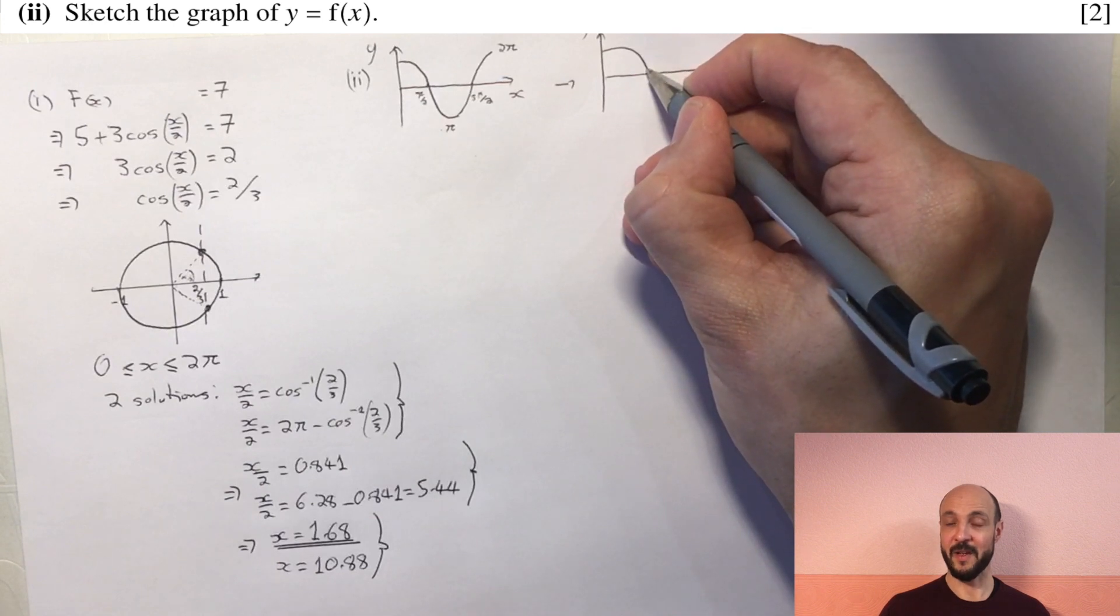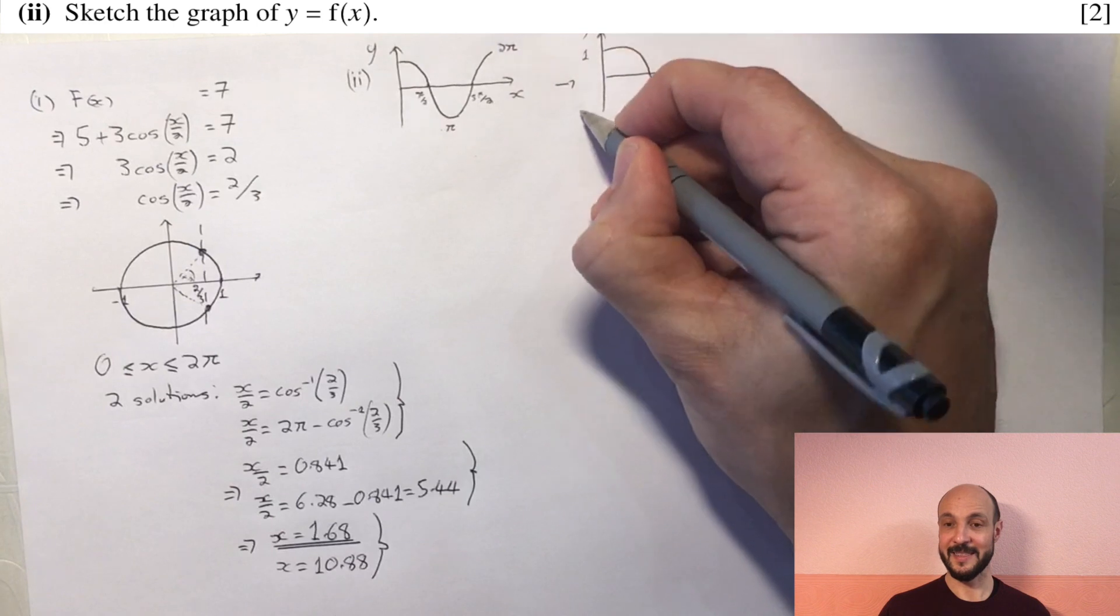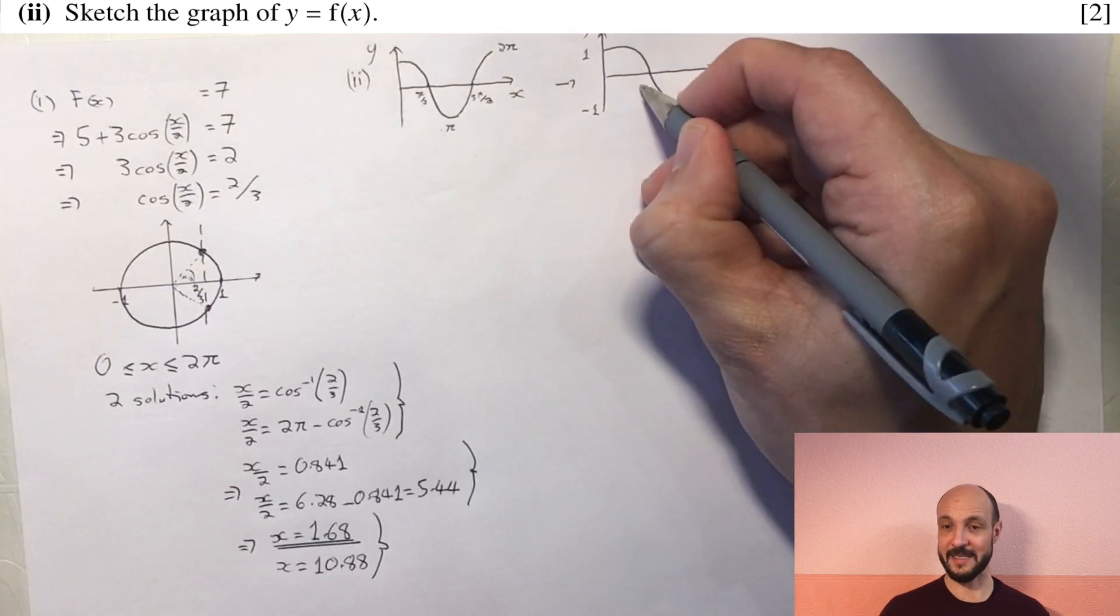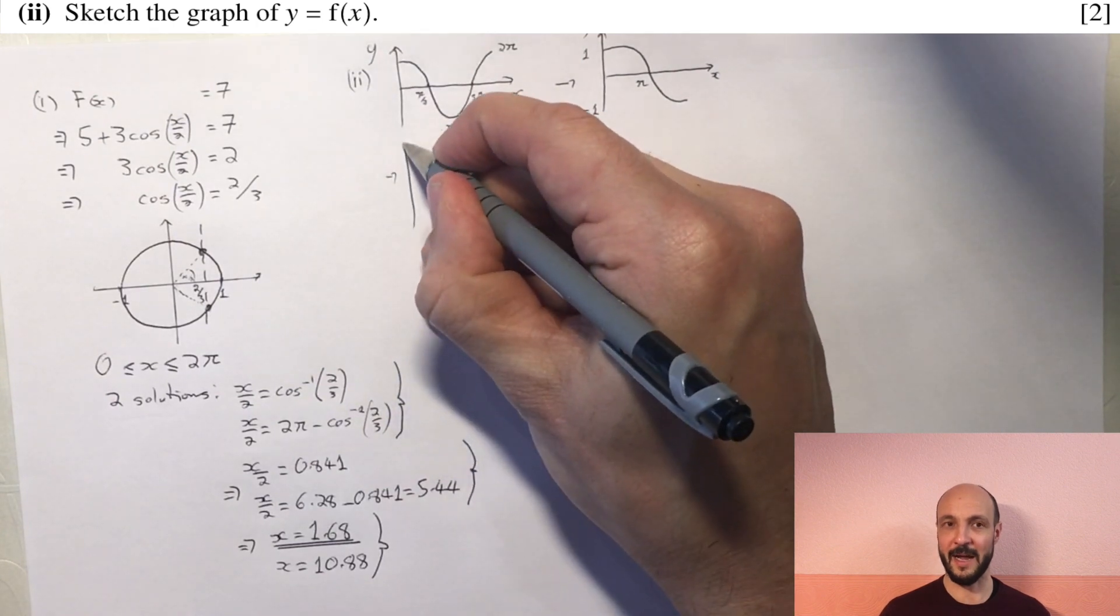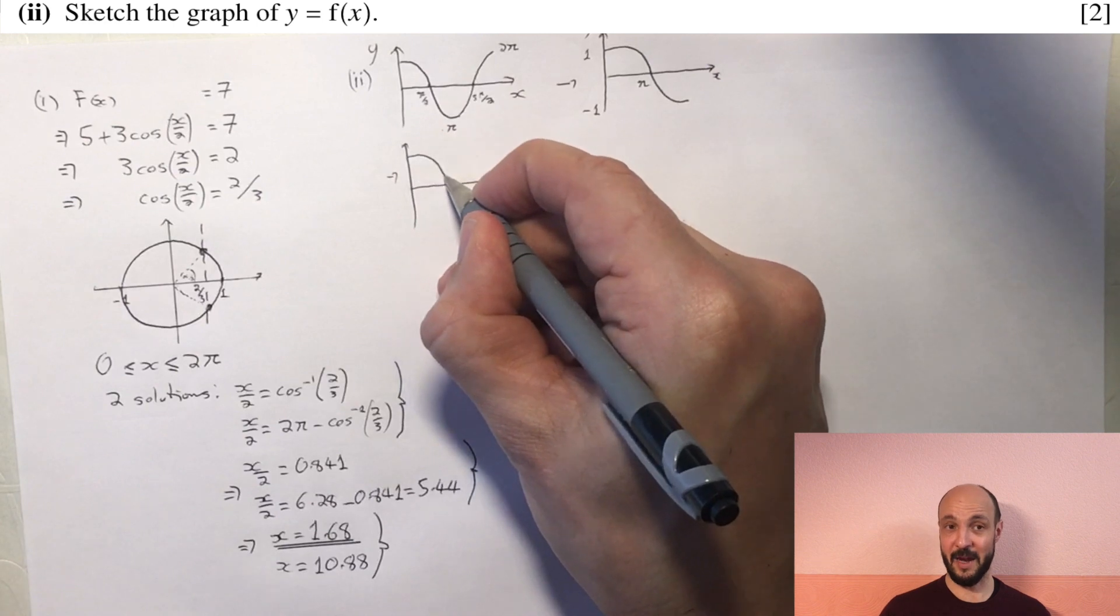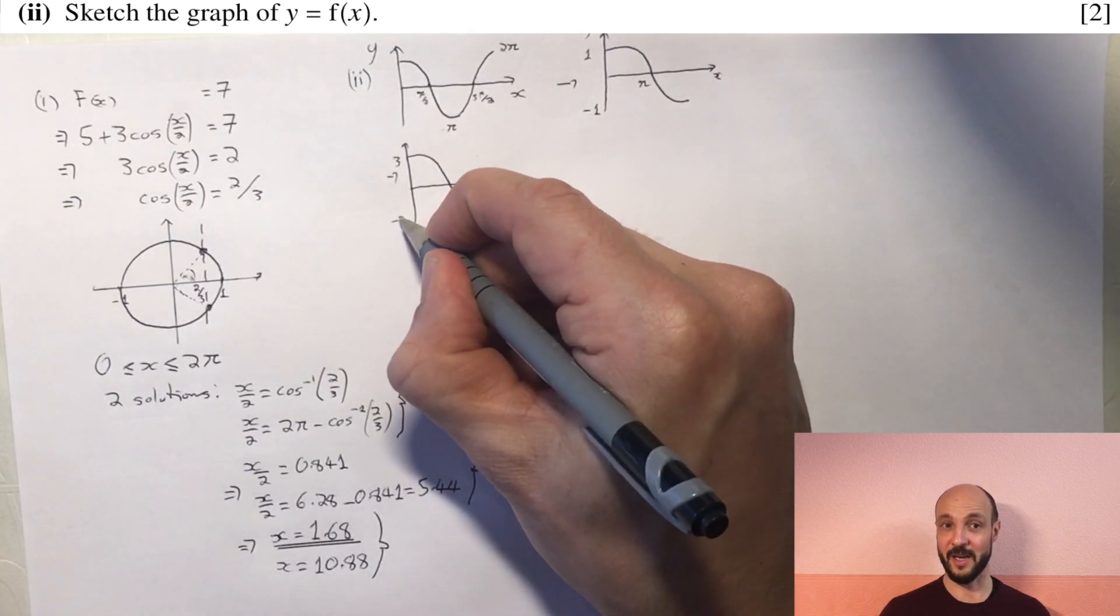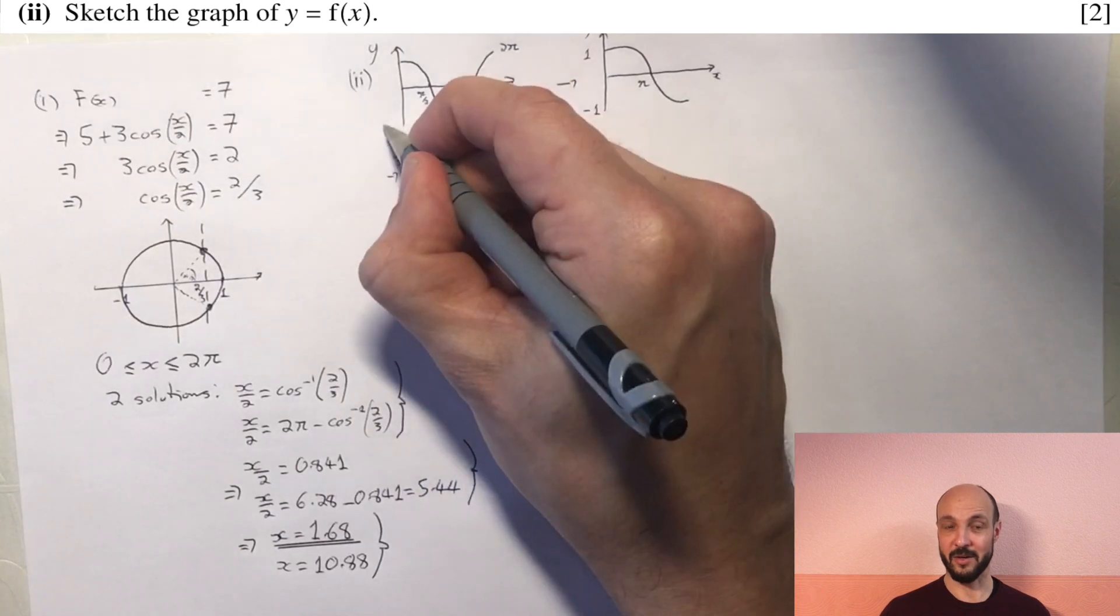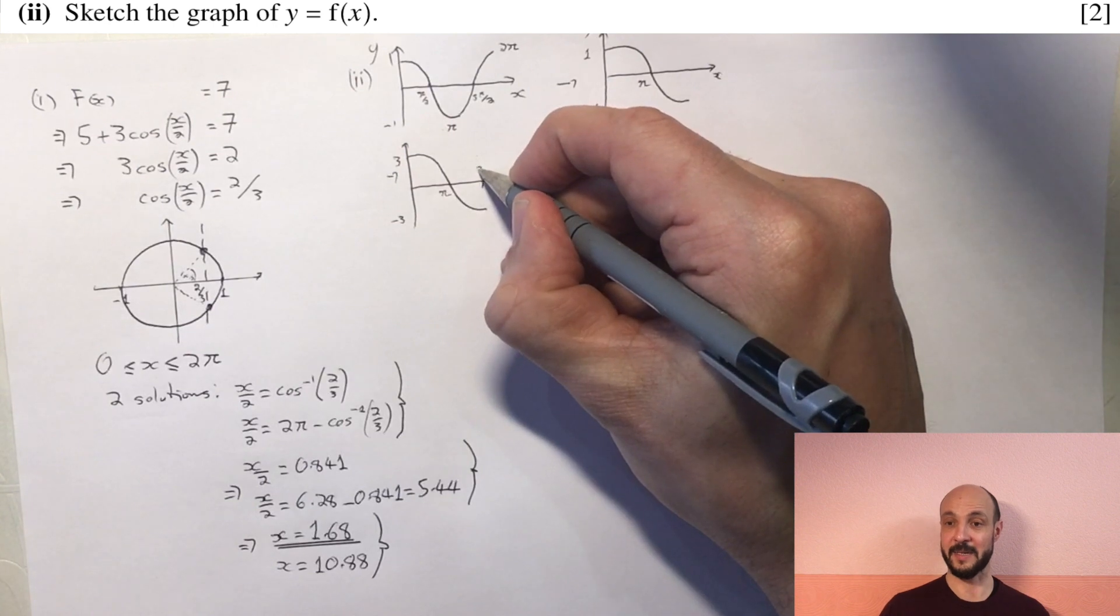We then have 3 times by cosine of x over 2. This is essentially stretching the y-axis because it's outside of the cosine function now. So we're essentially stretching the y by 3, so instead of the graph crossing the y-axis at 1, it's going to cross it at 3 now and go down as far as minus 3, still crossing the x-axis at π.